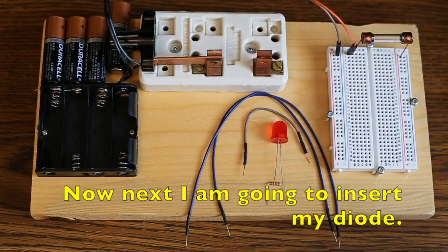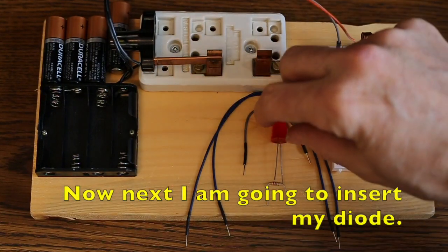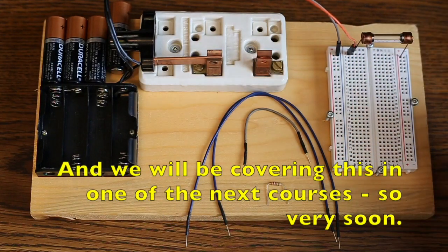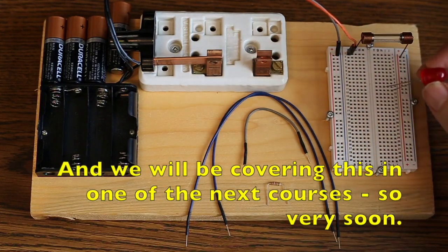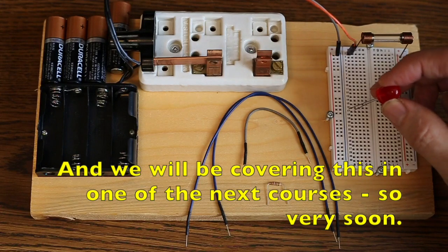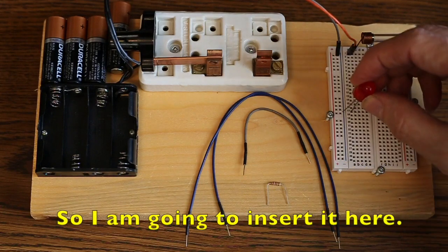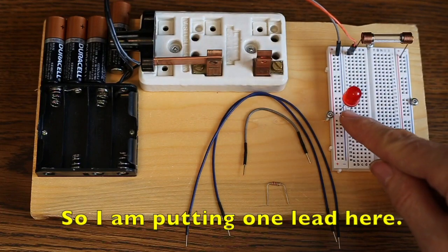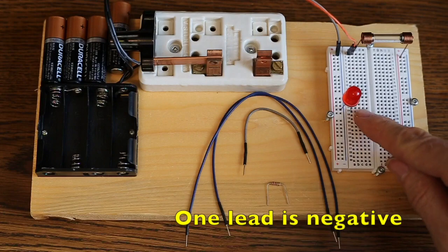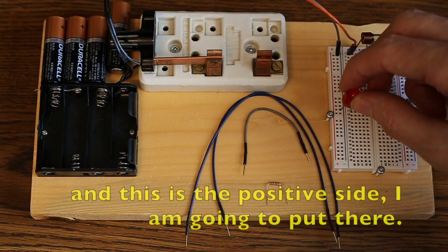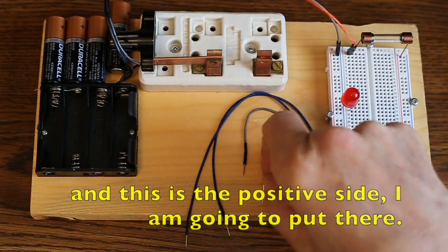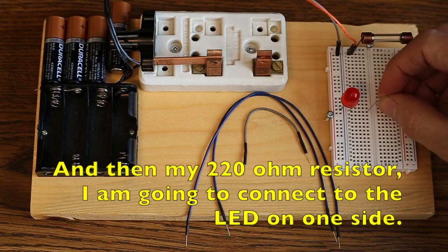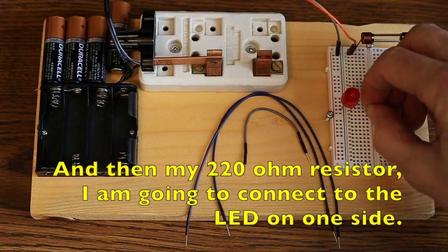Now next, I'm going to insert my diode, my light emitting diode, and we'll be covering this in one of the next courses, so very soon. So I'm going to insert it here. So I'm going to put one, one lead is negative, and this is the positive side. I'm going to put there, and then my 220 ohm resistor, I'm going to connect to the LED on one side.